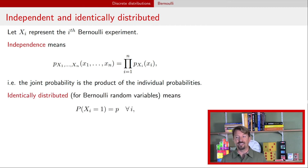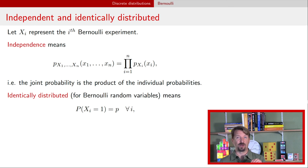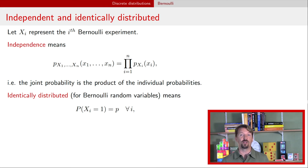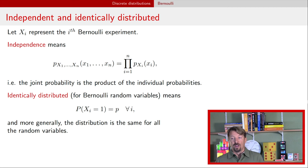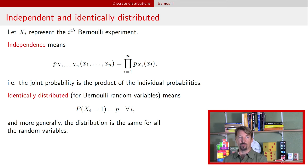Identically distributed means that the distribution is the same for every single one of those random variables. For Bernoulli random variables specifically, we're talking about the probability of getting a success. If that probability of getting a success is the same for every single trial, then the random variables are called identically distributed — that is, they have the same distribution. We let p be that common probability of success for every single experiment. We can extend this to any random variable by saying: if every single experiment has exactly the same distribution, then they are identically distributed.